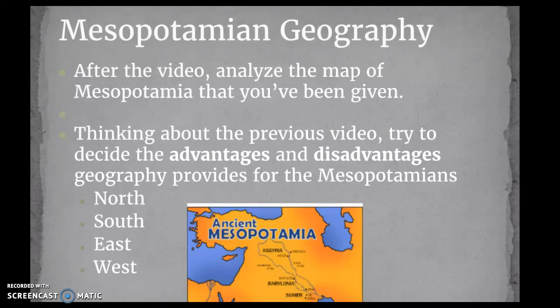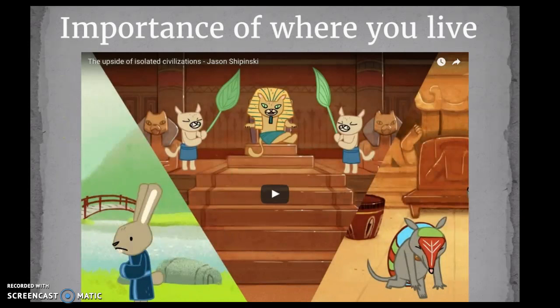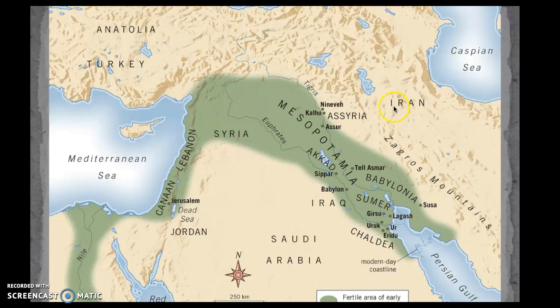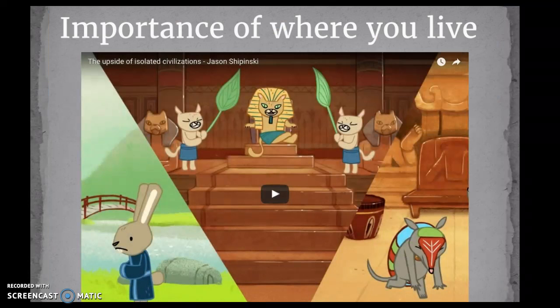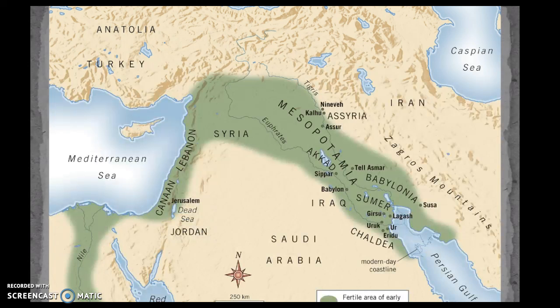What I'd like you to do is pause the video or pause this lecture, watch the video that's on the next slide — I've also linked it in your notes — and then come back to the slideshow. On the next slide is a map, and I want you to think about what are the advantages and disadvantages that geography provides for Mesopotamians. Look at the north, south, east, and west in terms of what advantages are there for the people of Mesopotamia. Pause the video now, watch it, and then come back and we will talk about the map.